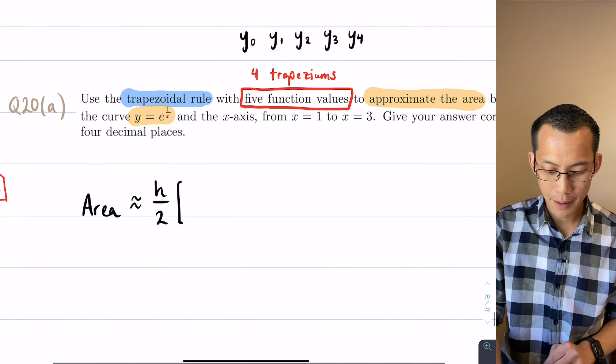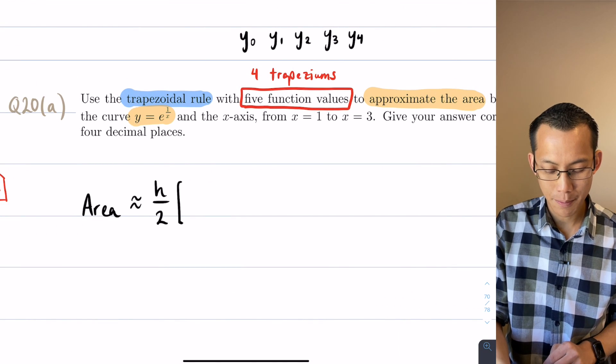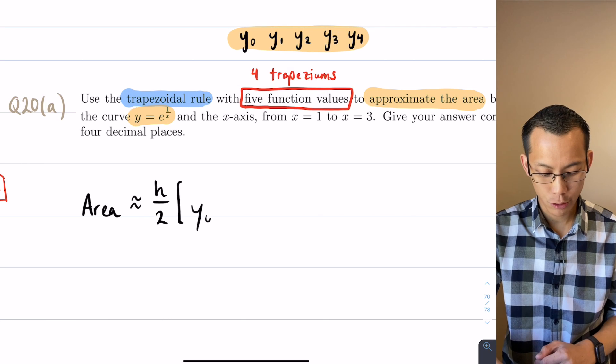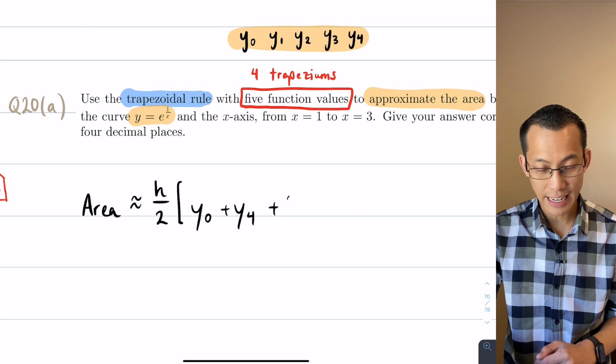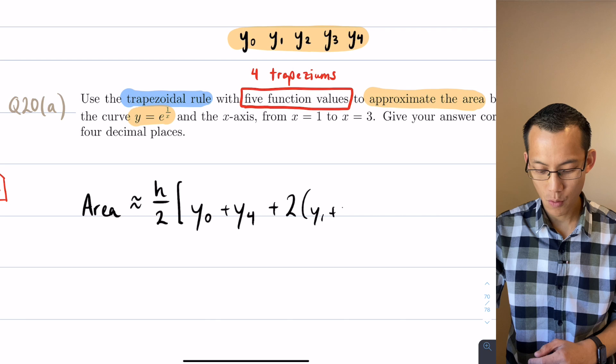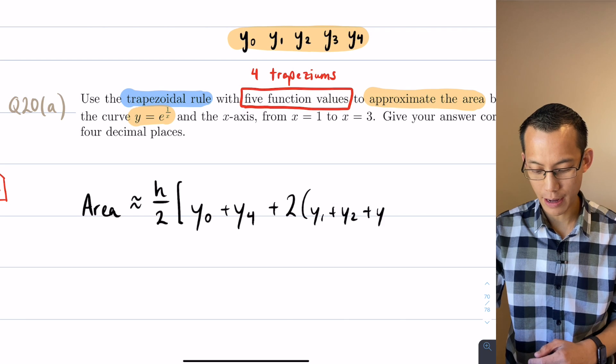So therefore, noting that I've got my particular names of my function values up here at the top, the first one will be y0, the last one will be y4, and then I get double all the ones in the middle, which is y1, y2 and y3.